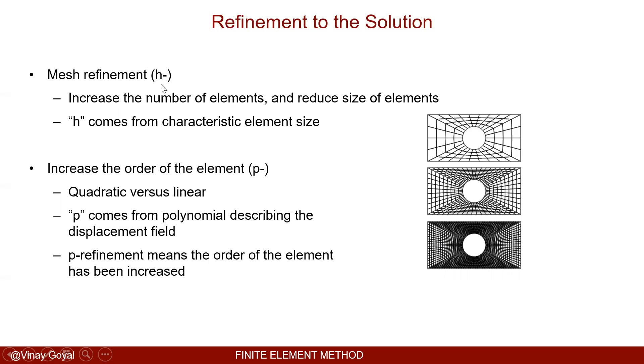Going from linear element to quadratic element is called the p-refinement, while increasing the mesh density size is called the h-refinement. P comes from the polynomial describing the displacement field. In essence, when you go from first order to second order, we're just saying that we're using p-refinement. If you increase number of elements, that's called h-refinement.